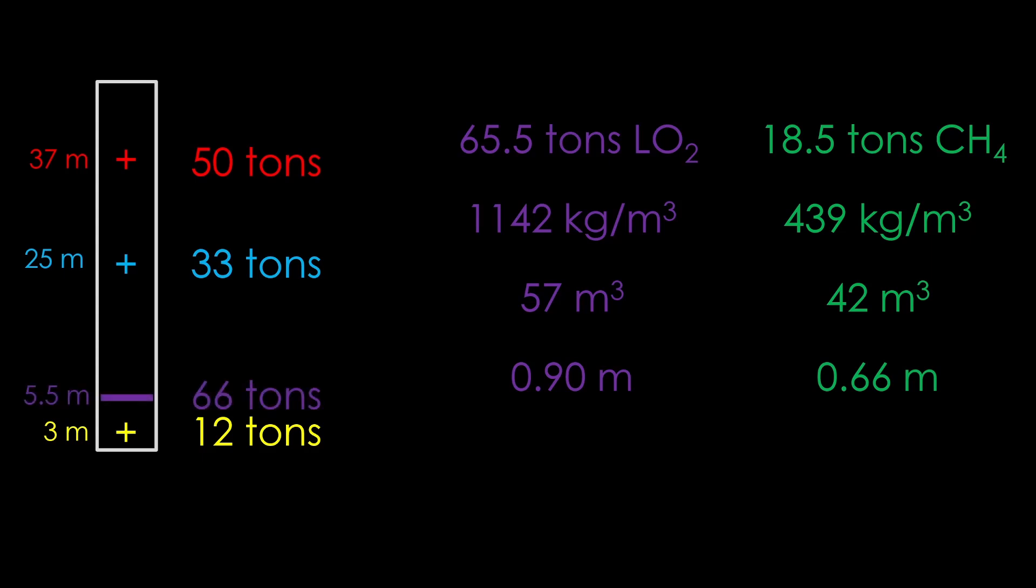18.5 tons of liquid methane at a density of 439 kg per cubic meter means we have 42 cubic meters of liquid methane, and in a 9 meter tank that is 0.66 meters tall. Basing the tank locations on drawings of Starship, that adds 66 tons of mass from the liquid oxygen at 5.5 meters, and 19 tons of mass from the liquid methane at 17.3 meters. Do the calculation, and we find that the center of mass is now 19 meters off the ground, or nearly 10 meters lower.